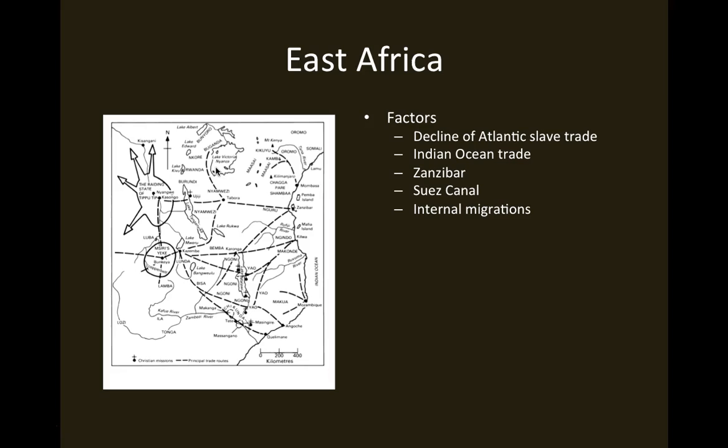Another factor in the 19th century was the building of the Suez Canal, completed in 1869, which allowed trade that had previously had to go all the way around Africa to pass up through the Red Sea through the Suez Canal into the Mediterranean. This helped shift the economic thinking of people in East Africa as they became interested in trading via the Suez Canal with Europe, Egypt, and the Mediterranean region.